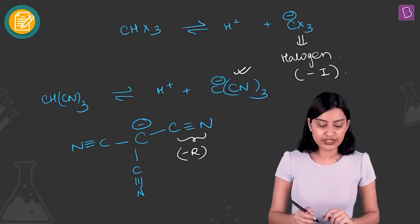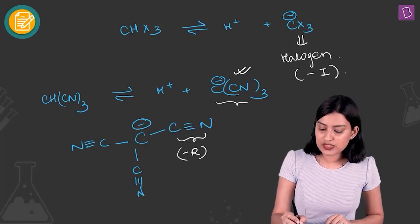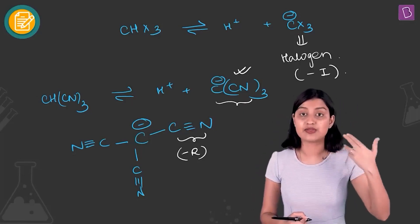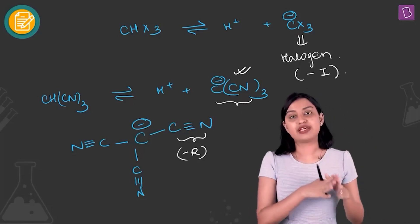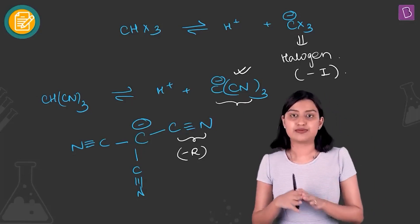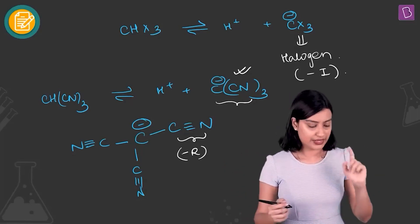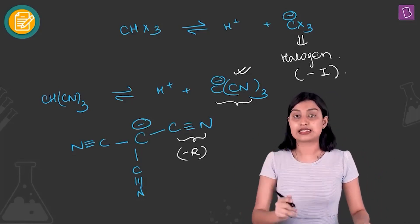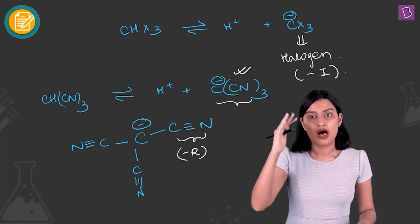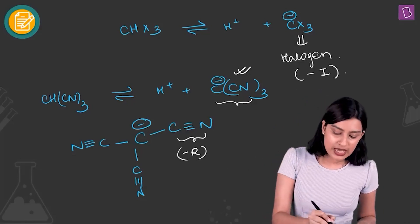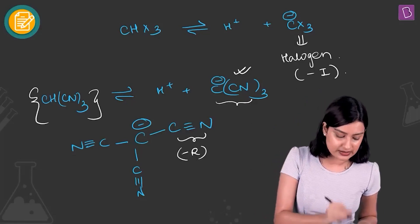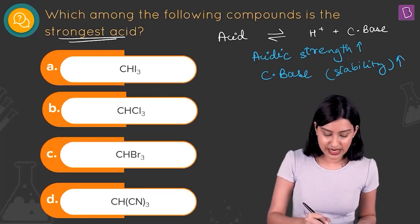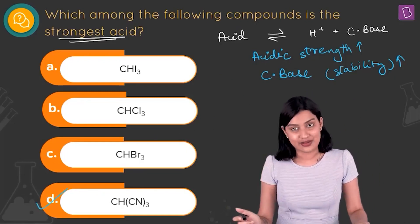Resonance is the dominant factor in determining stability, more so than inductive effect. Because resonance is operating in C(CN)3⁻, it is the most stable conjugate base among the four options, which means CH(CN)3 is the strongest acid. The right answer is option D.